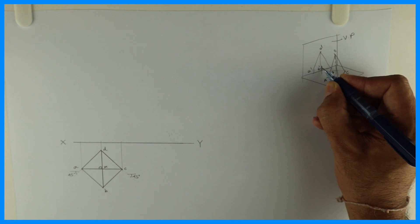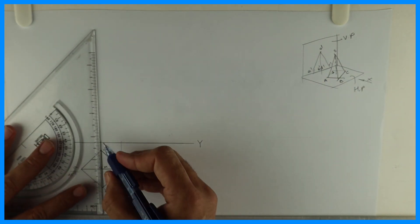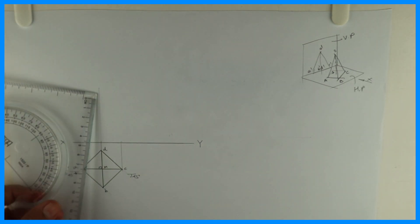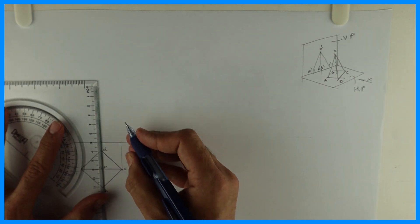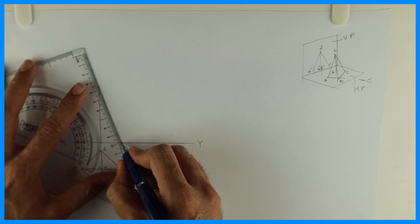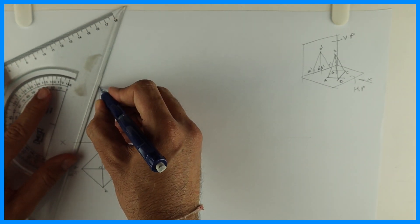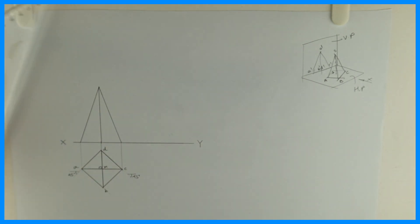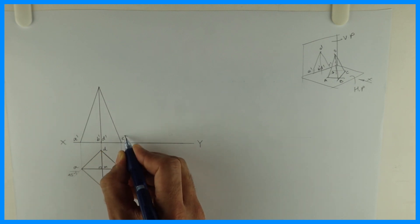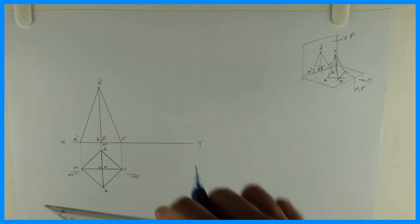In front you will see A', B', C', D' and O'. So height is how much? 60. So I will go 60 up. And I will draw front view. So this is A', B', D' and C', this is O' and M'. So we are done with front view, top view.